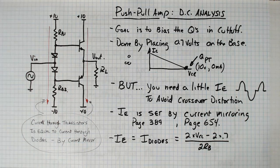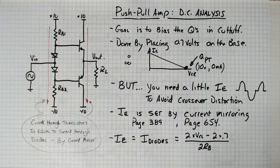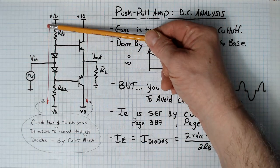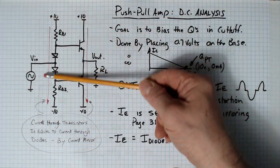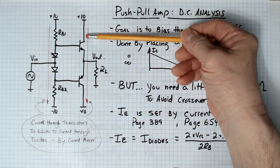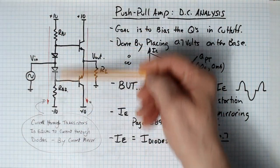How this works is that you set the emitter current by something called current mirroring. This is in the text on page 389 and page 654. By current mirroring, essentially what current mirroring says is that if you get a little bit of current coming down here, by current mirroring you'll get the same current coming down this path here. So if you set this up to two milliamps, you should get two milliamps coming down here.